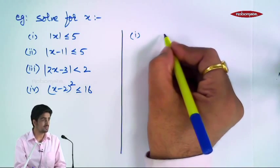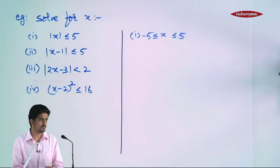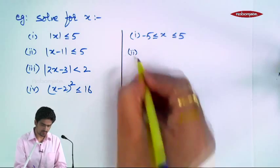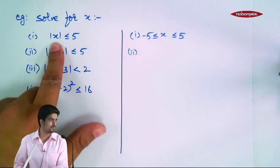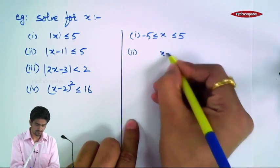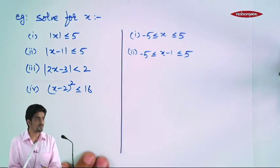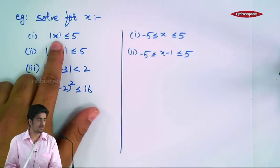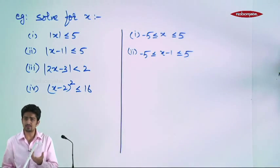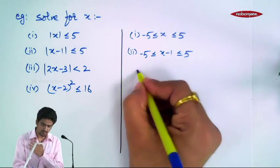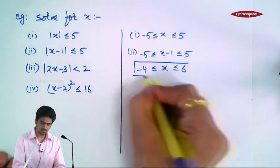X is minus 5 to 5 — direct result. Second: kisi bhi cheez ka magnitude less than equal to 5 hai, to wo cheez minus 5 aur 5 ke beech mein hogi. Kisi cheez ka magnitude less than 5 hai, to wo cheez minus 5 aur 5 ke beech mein hogi. Finally, I want x. Adding 1, we get minus 4 less than equal to x less than equal to 6. So, this is my answer.